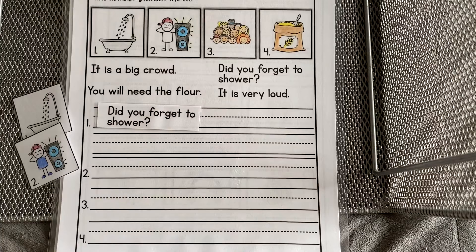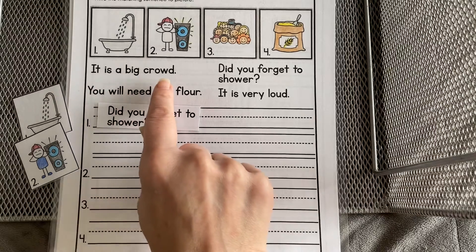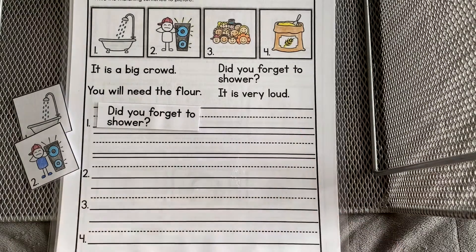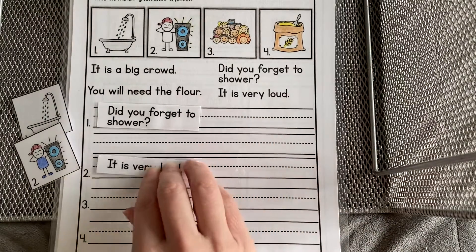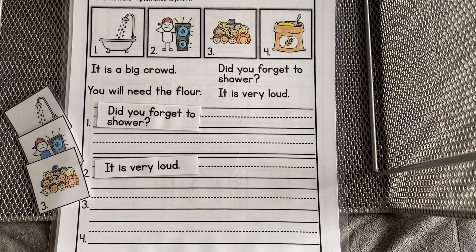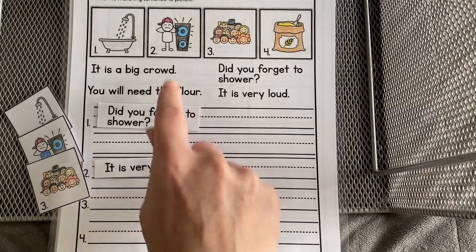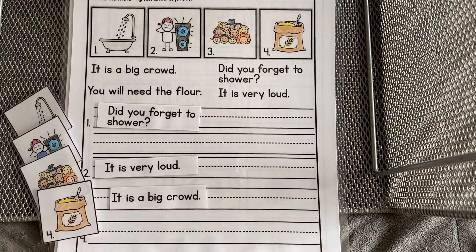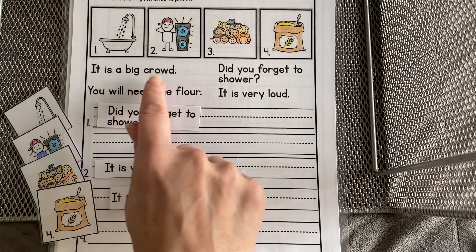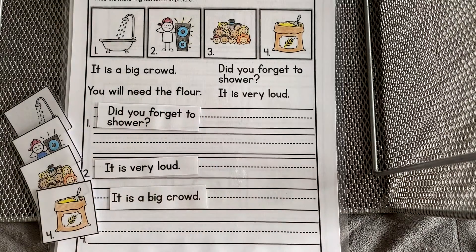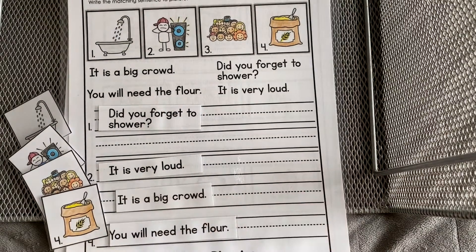Number two — it seems like it's too loud. 'It is very loud' — he's holding his ears. Number three looks like a lot of people: 'It is a big crowd.' Number four: 'You will need the flower.' There you go.